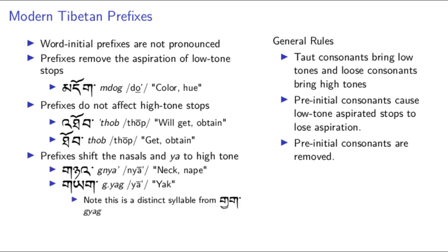Prefixes have one other general effect in modern Tibetan. Taut consonants tend to be reanalyzed as high tones, and we see this as prefixes in initial position raise the tone of nasals and glides. In loose logical terms, having a busier initial consonant in Old Tibetan can be seen as more taut, and causes the following consonant to have a bit higher tone. Think about the Old Tibetan gnam next to the simple syllable na. The na in modern Tibetan now carries a low tone, which makes sense as it's a voiced syllable. But the prefixed consonant in gnam makes the initial consonant feel sharper and more taut, and so when the initial consonant cluster disappeared, it was reanalyzed as a high tone. This happens with all nasals and glides.